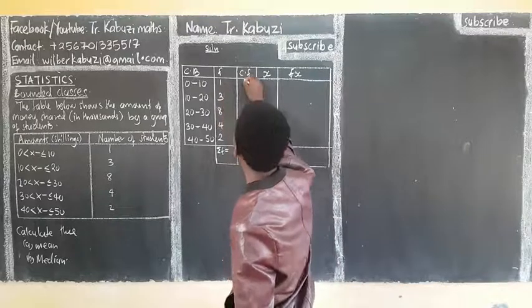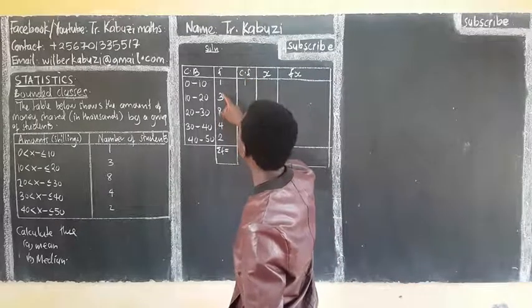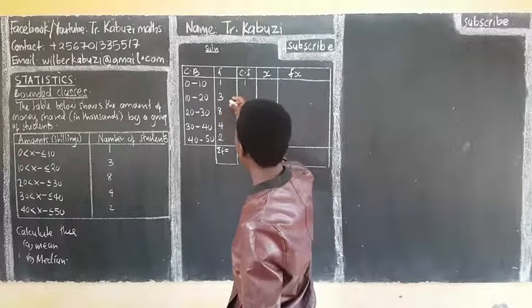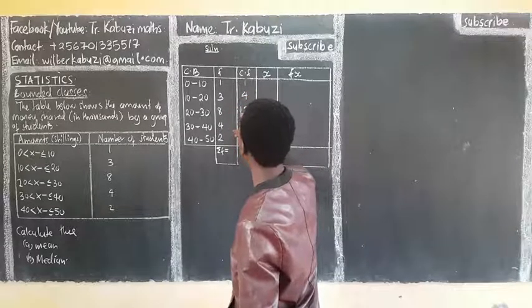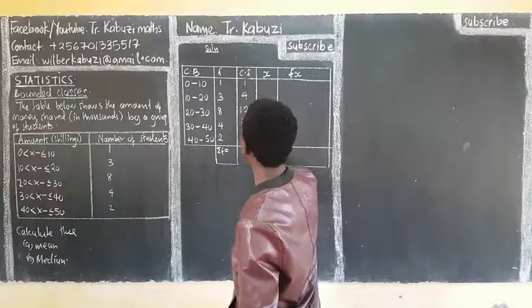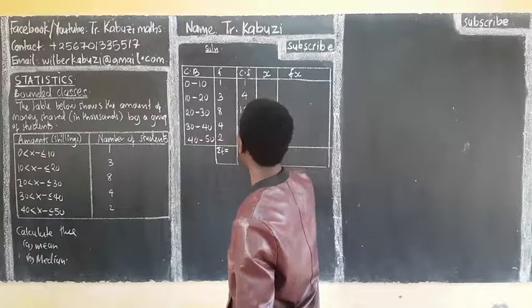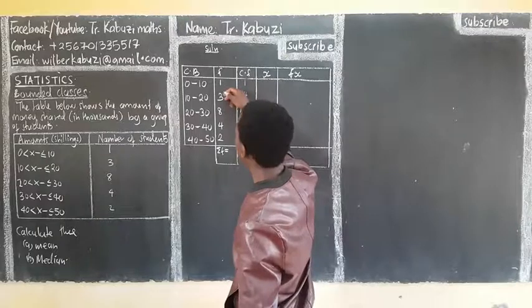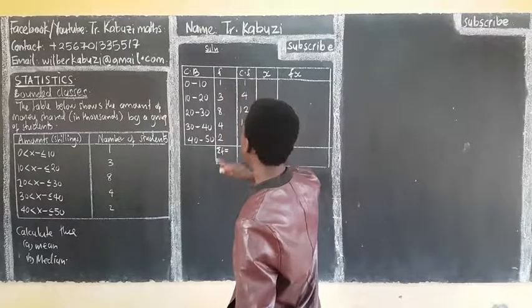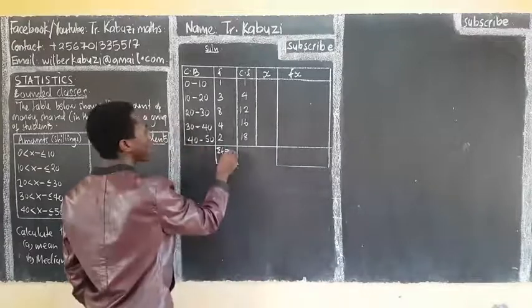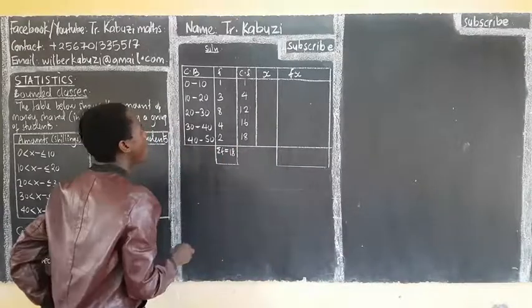In the frameworks, you take this, then you put there one, then you say this plus this, you get four. This plus this, you get four. This plus this, you get sixteen. Then this plus this, you get eighteen. And then you add this one, this is four, plus eight, twelve, plus four, sixteen. Then also here, we are getting eighteen.